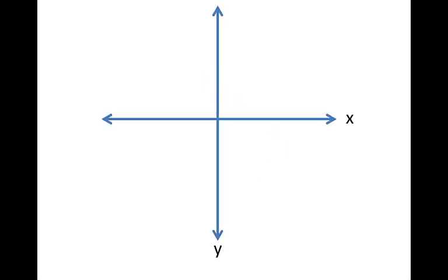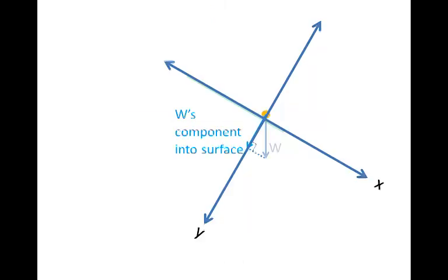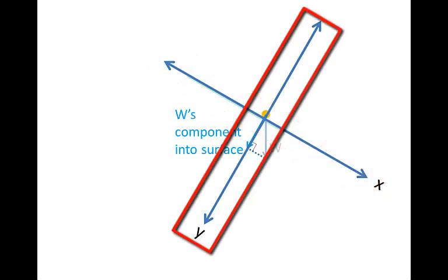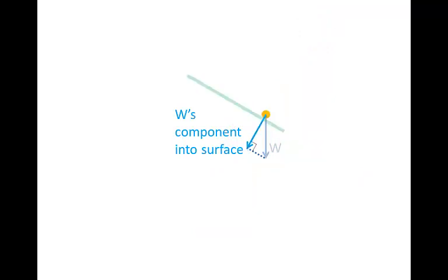To help us with this, here we have a Cartesian plane with the x-axis horizontally and the y-axis vertically. Let's twist this Cartesian plane and put it over our slope so that the x-axis lies on the slope. The y-axis is then perpendicular to the slope. The normal force will act along the y-axis, and the normal force will be as strong as the weight's component acting into the surface — in other words, W's y-component.